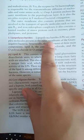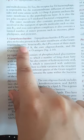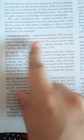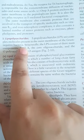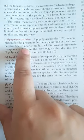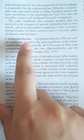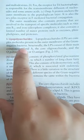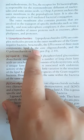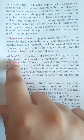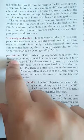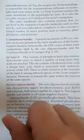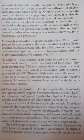Lipopolysaccharides are complex molecules present in the outer membrane of gram-negative bacteria. They are divided into three main components: Lipid A, core oligosaccharide, and O-polysaccharide or O-antigen.